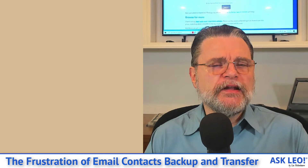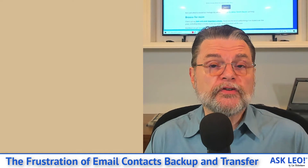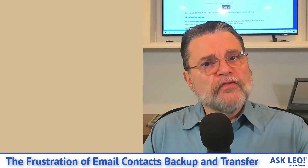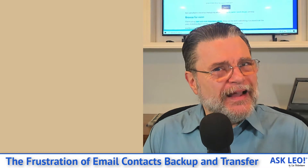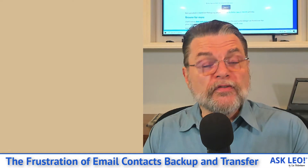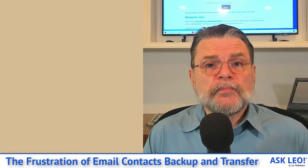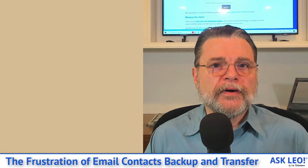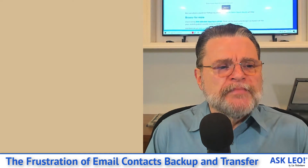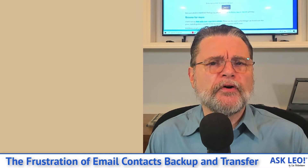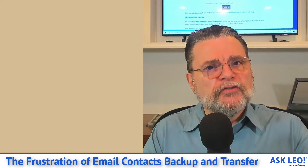There really is no standard interchange format for transferring contact information between different services. What's worse is that there really isn't a standard definition of what it means to be a contact. You're probably thinking it's a name and an email address — well, kind of. It's a name and an email address and a physical address and a phone number and maybe some notes and a place of employment and a few more email addresses, a few more phone numbers, a bunch more information. There's no real bound on exactly how much information could be kept as a contact. Different email programs treat them differently. Even at the specific level, if you look at a physical mailing address, is that one field that just has the address in it, or is it address line one, line two, line three, city, postal code, province or state, country? It gets really complicated really quick.